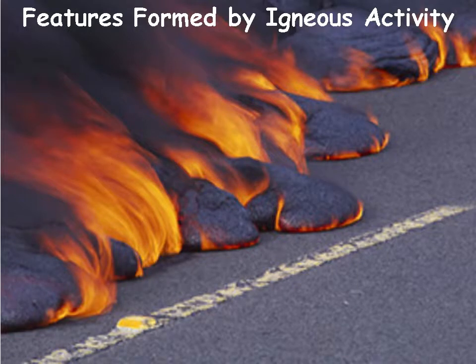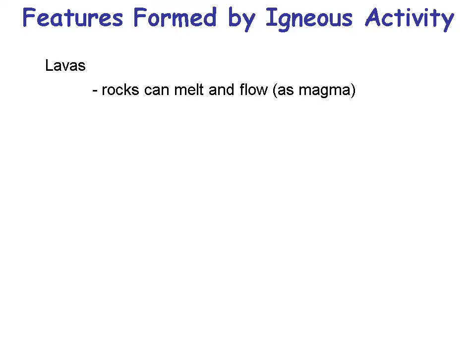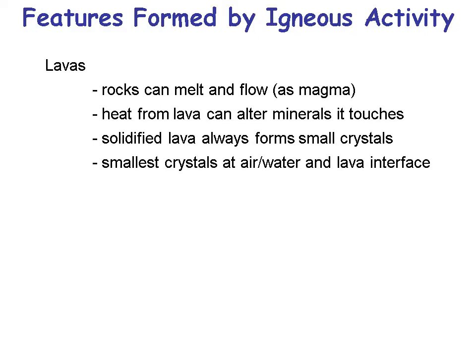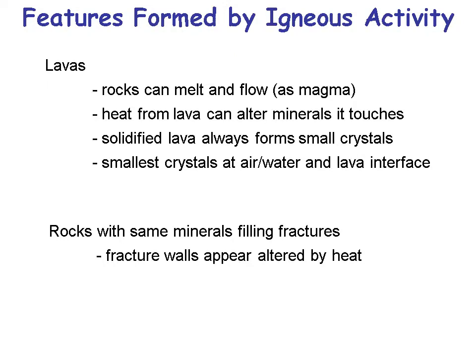Here's a good example of lava flowing across the street from Hawaii. Lavas can melt and flow as magma. Heat from lava can alter the minerals it touches — like metamorphism — or just bake them. Solidified lava always forms small crystals, and the smallest crystals form at the air and water interface with the lava. A lot of times crystals are large when they fill fractures.